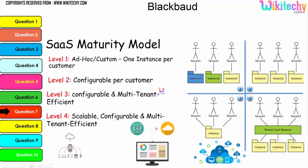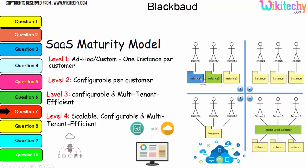You are able to see level one here — one instance per customer — and level two, configurable per customer. You can see different color-coded instances. Level three is configurable with multi-tenancy, and here you have a load balancer — scalable, variable, multi-tenant, and efficient. This is your cloud computing network or environment.